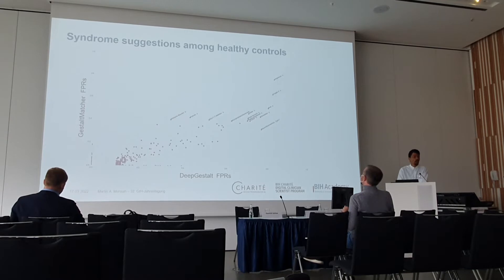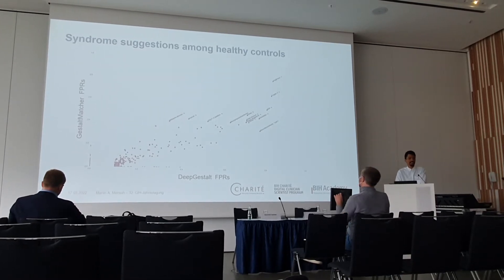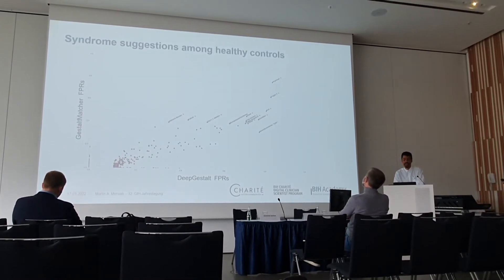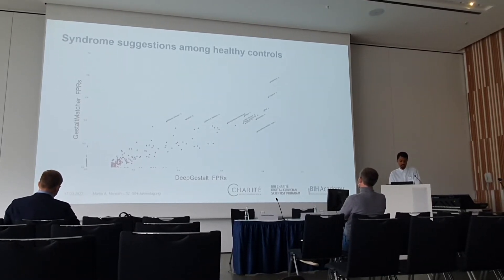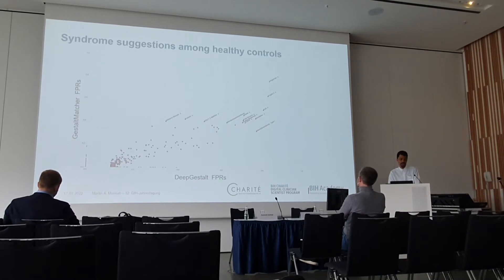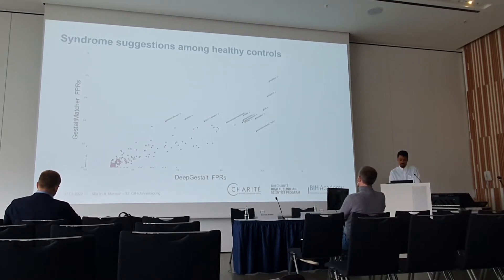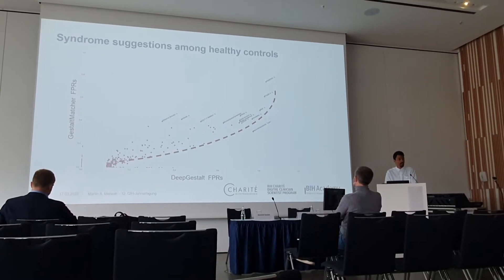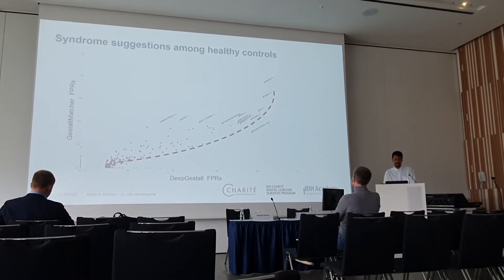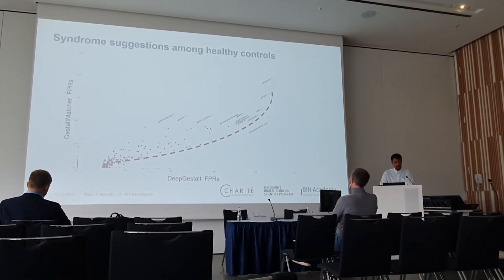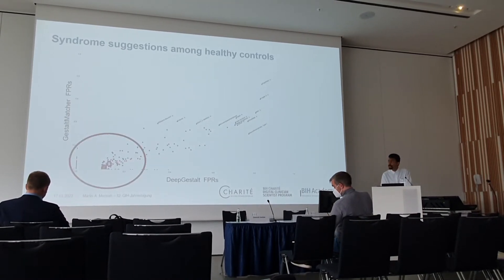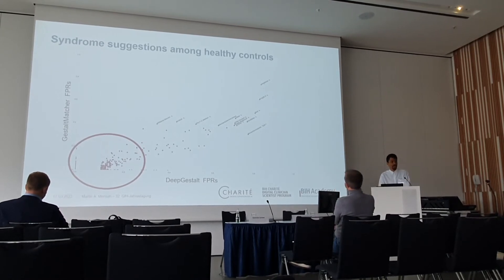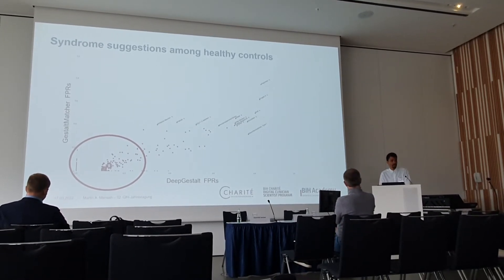As we've seen, it always suggests a syndrome. We tested what syndromes the tool suggests — on the x-axis you see the false positive rates by Deep Gestalt, on the y-axis the false positive rates by Gestalt-Matcher — and we saw that if a syndrome is frequently falsely suggested by Deep Gestalt, it is also frequently suggested by Gestalt-Matcher. However, the majority of syndromes that these tools can classify show low false positive rates, so for these they work pretty well.